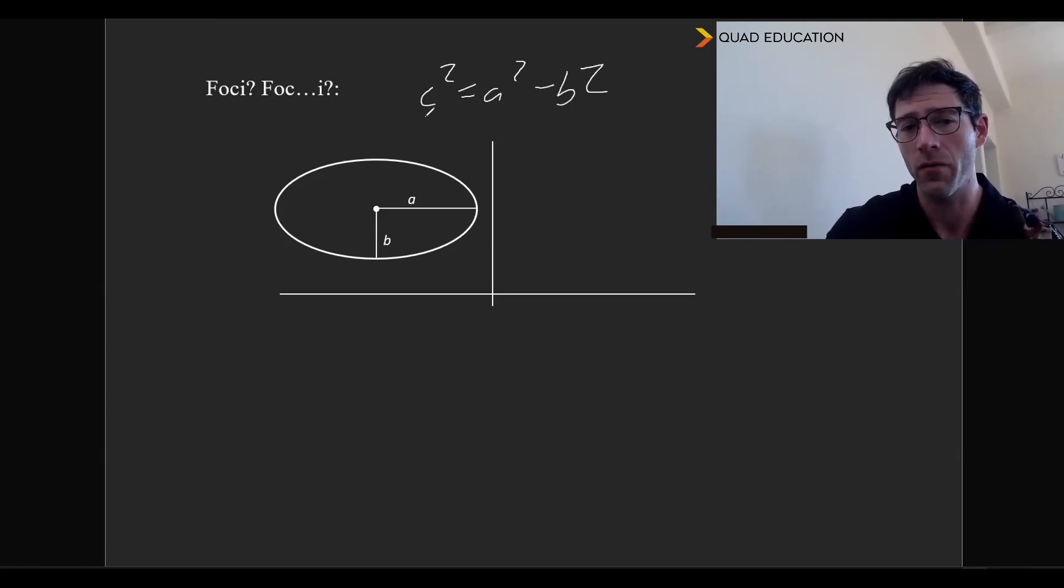So that's whatever the square root of the square of the major axis, and the difference of that between square of the minor axis is going to be what our foci are. And the foci lie along the major axis.